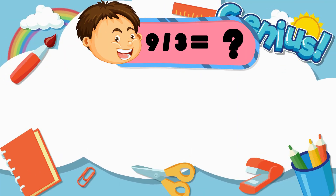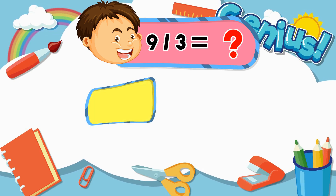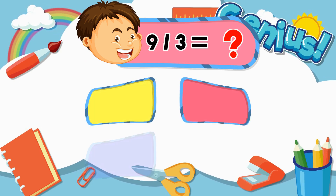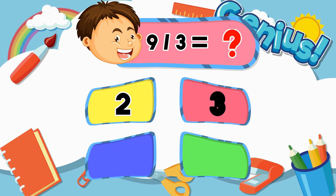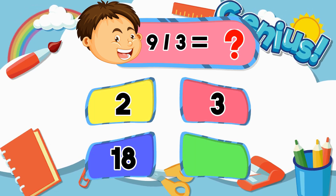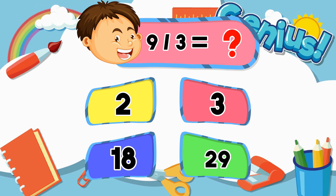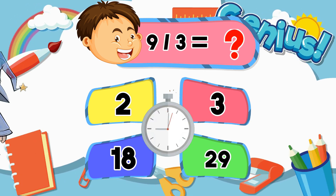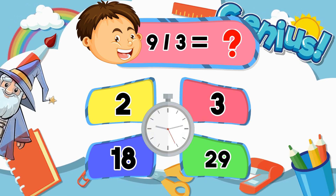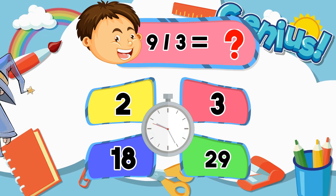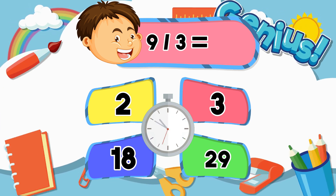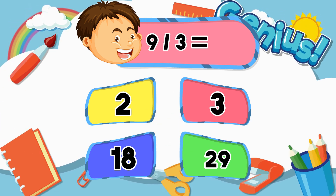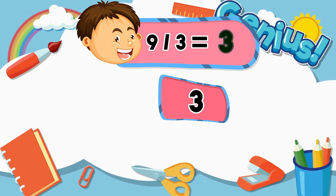What is 9 divided by 3? 2, 3, 18, 20, 29. The answer is 3.